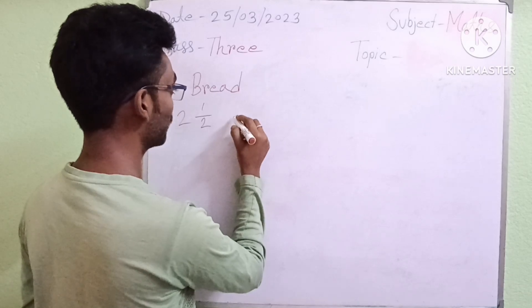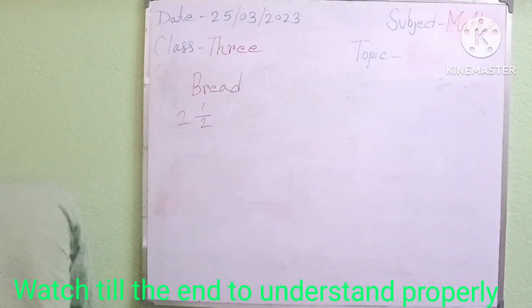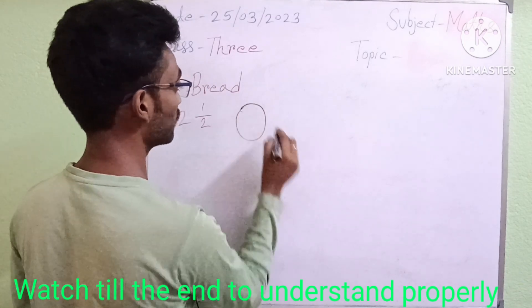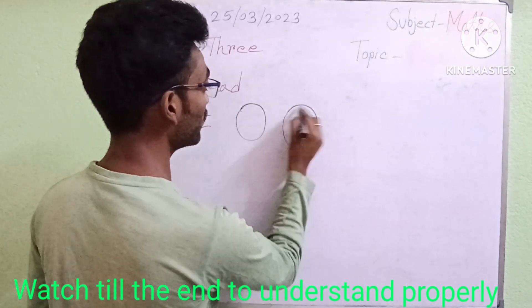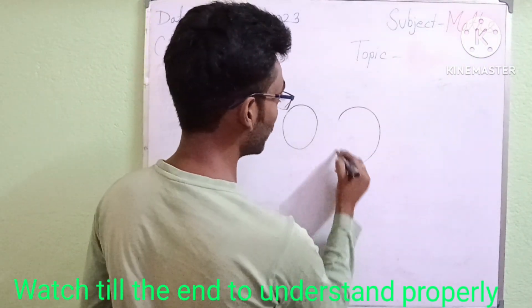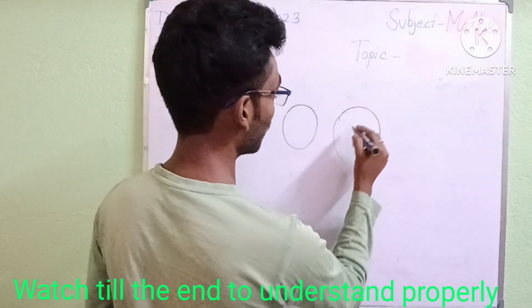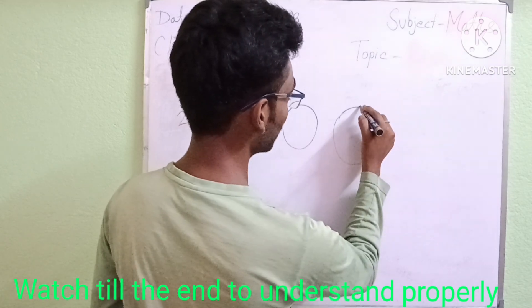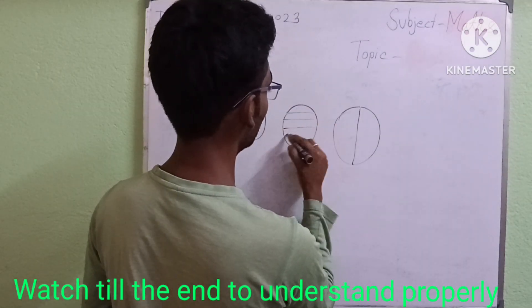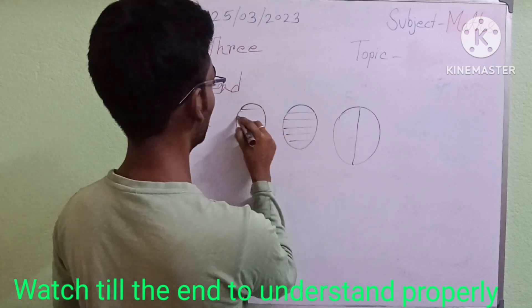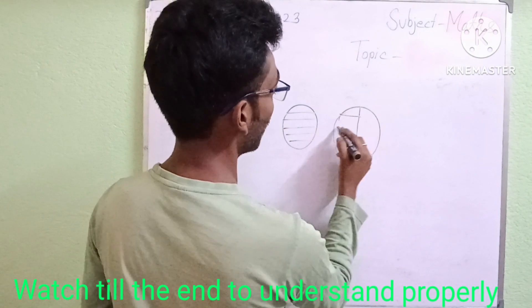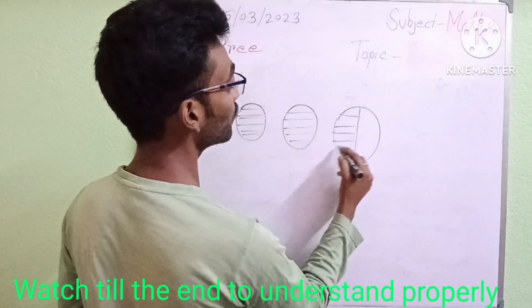And if I draw here your bread, I have eaten one bread, two bread, and a half bread. Then I can draw this like this. You have eaten this part, one part, two part, and a half part. Good.